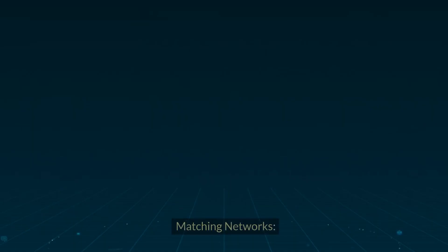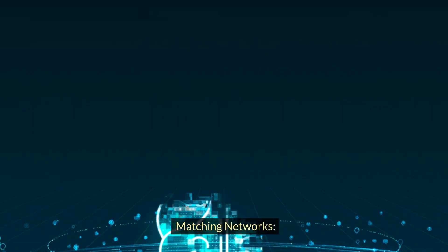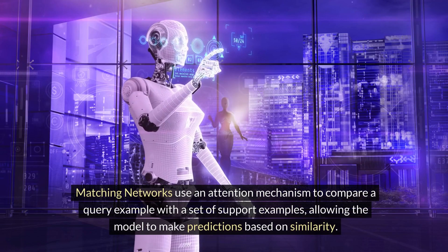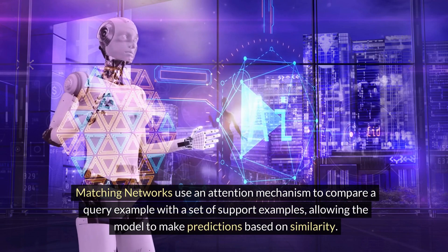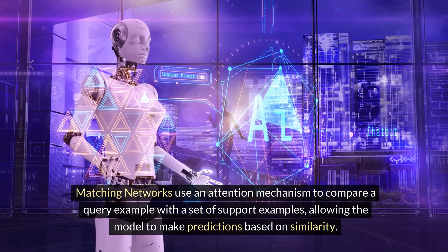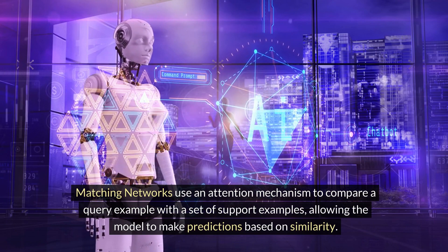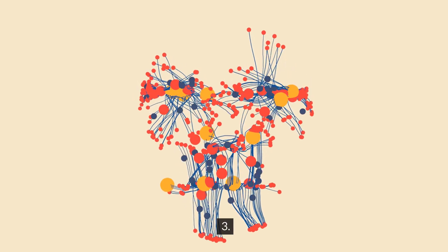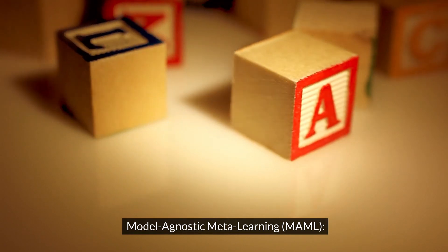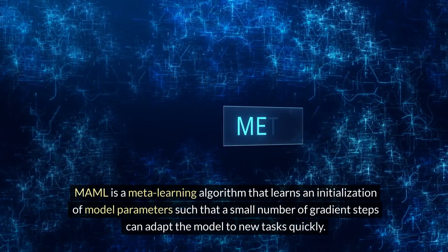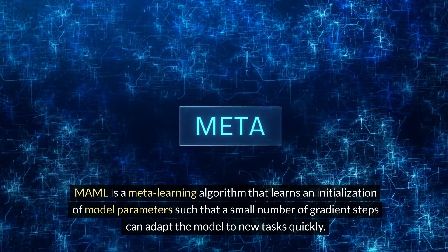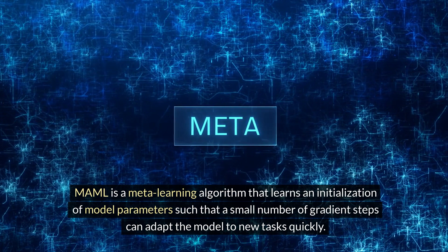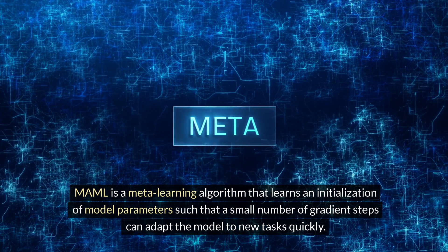2. Matching Networks — Matching Networks use an attention mechanism to compare a query example with a set of support examples, allowing the model to make predictions based on similarity. 3. Model-Agnostic Meta-Learning (MAML) — MAML is a meta-learning algorithm that learns an initialization of model parameters such that a small number of gradient steps can adapt the model to new tasks quickly.